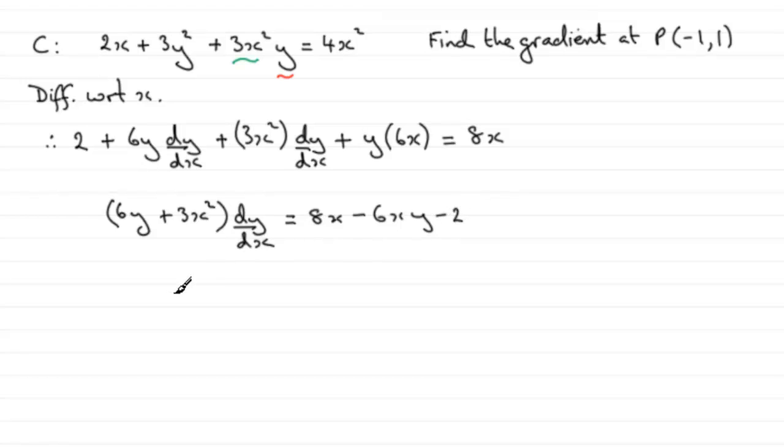So to get dy/dx, dy/dx is just going to equal 8x minus 6xy minus 2 divided by 6y plus 3x squared.